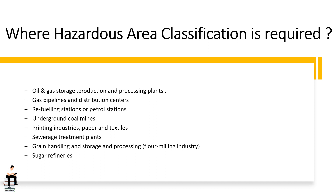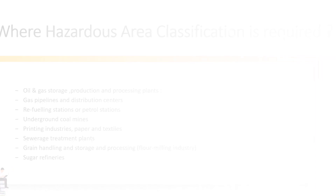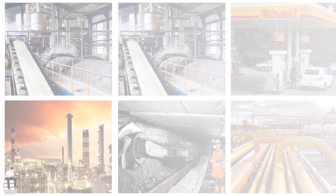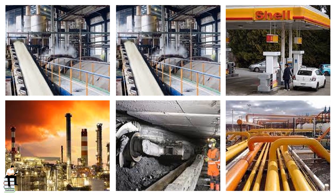Few examples are oil and gas storage, production and processing plants, gas pipelines and distribution centers, refueling stations or petrol stations, underground coal mines, printing industries, paper and textiles, sewage treatment plants, grain handling and storage and processing, flour milling industry, and sugar refineries.